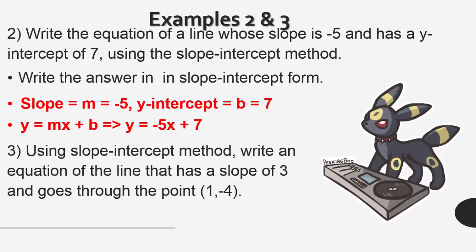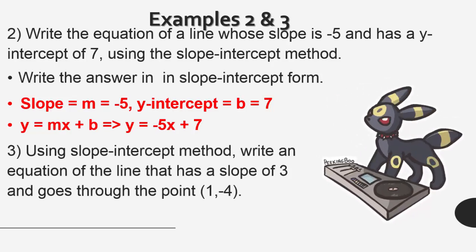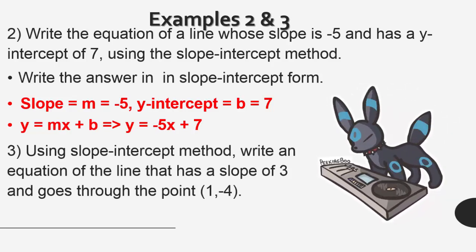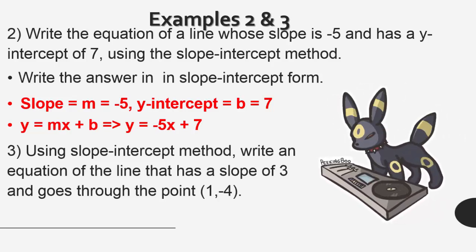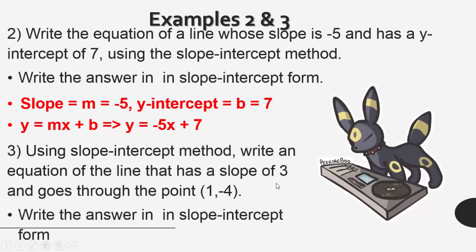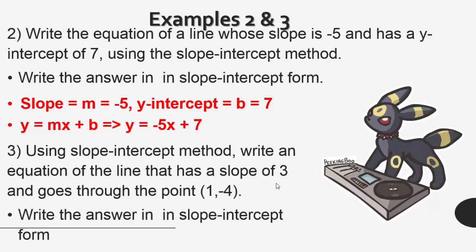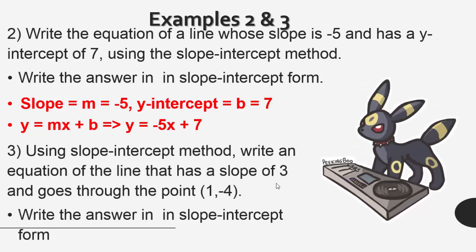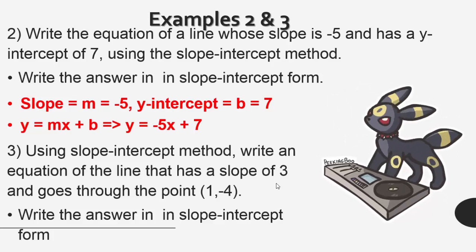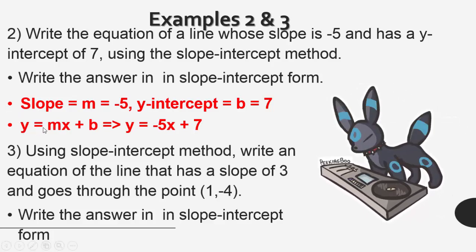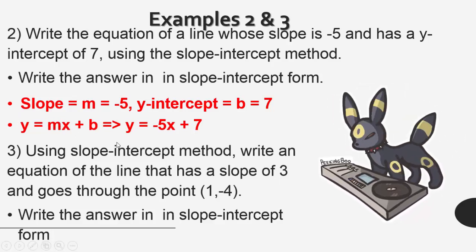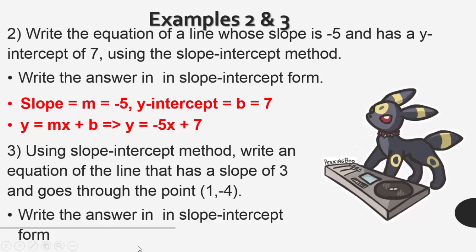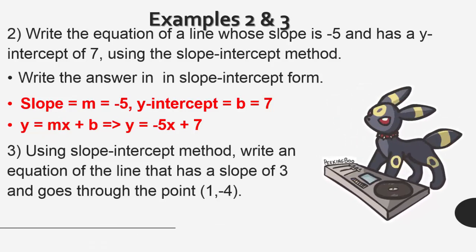The equation of our line in slope-intercept form becomes y is equal to negative 5x plus 7. In example number 3, using the slope-intercept method, we're asked to write an equation of the line that has a slope of 3 and goes through a point. We want the answer in slope-intercept form, which means y is equal to Mx plus B, where M is the slope and B is the y-intercept.